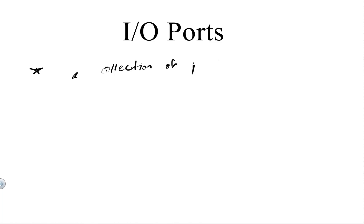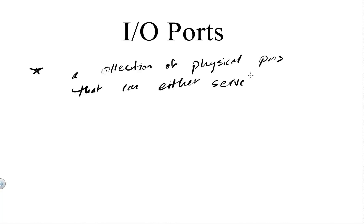The main thing we need to remind ourselves about IO ports before we start getting into our examples is what an IO port actually is. As we discussed in a previous video, an IO port can be defined in many capacities. For the purposes of this course and this video, let's keep it simple and relate an IO port to a collection of physical pins that can either serve as inputs or outputs.